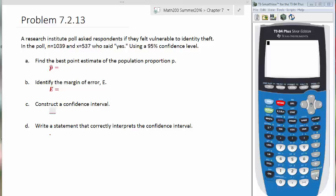This is a problem from section 7-2, a problem similar to your homework. It says that a Research Institute poll asks respondents if they felt vulnerable to identity theft. And in the poll, we have an N is 1039 and an X of 537, those people who said yes.